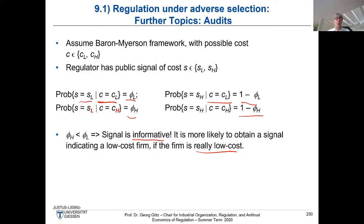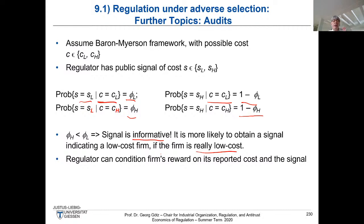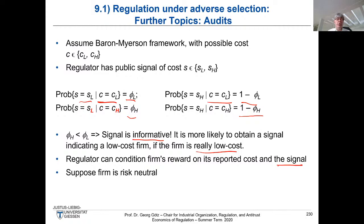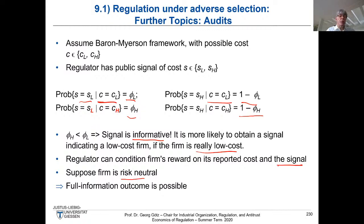Even though our signal is not perfect, the regulator can condition the firm's contract and reward on its reported cost and the signal. An important assumption for now is that the firm is risk neutral — we will discuss risk neutrality, risk aversion, and risk-loving behavior in more detail in the chapter on moral hazard. Even though you get such a noisy signal, you will see that the full information outcome is possible. That's what I'm going to show you in the next few slides.